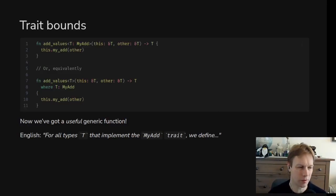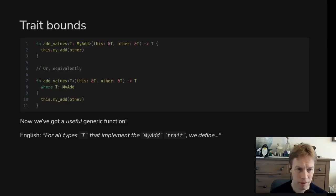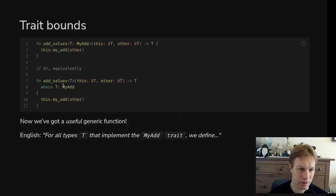We're writing this add function where we've said: this function is generic over this type T, and that means the code inside this function is valid for any T, so long as T fits in with the constraint we've provided.